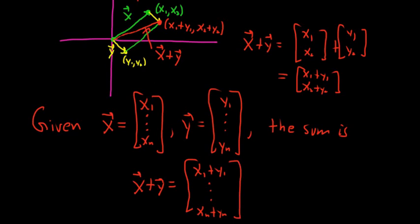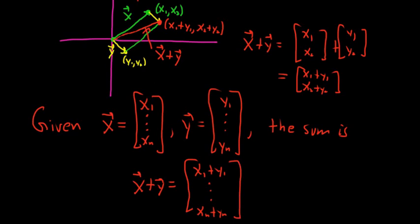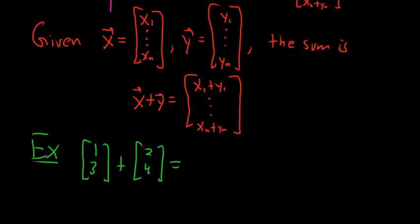Let's do a quick example of just adding two vectors, just a practical example so you see how that works. So say we have (1, 3) plus (2, 4). So all you would do here is 1 plus 2 is 3, and 3 plus 4 is 7. So very, very simple. Not difficult at all.